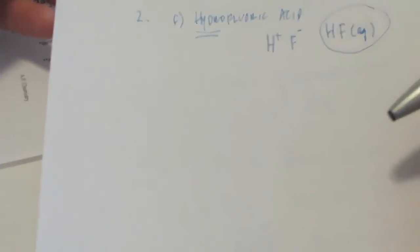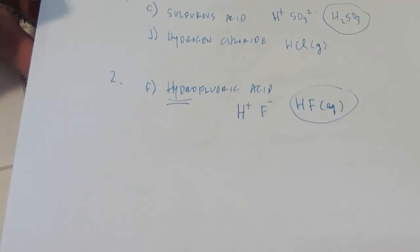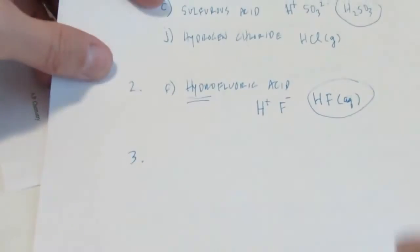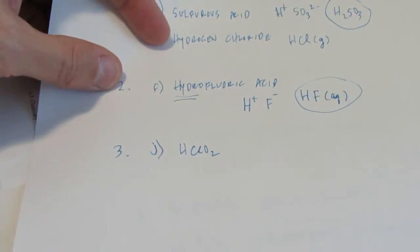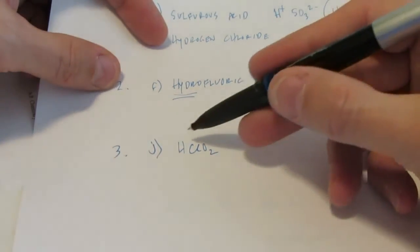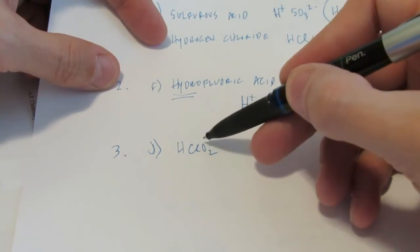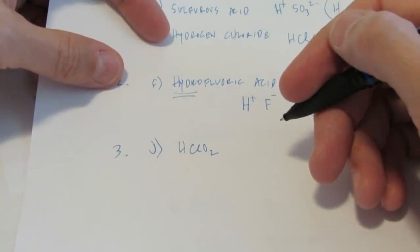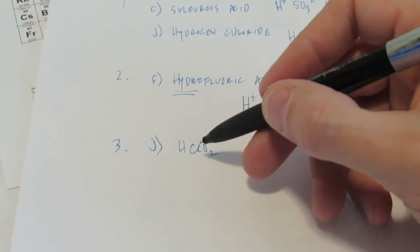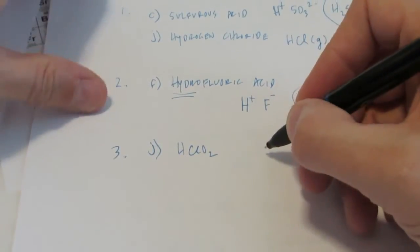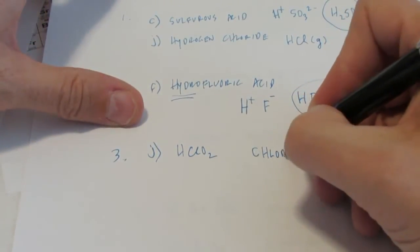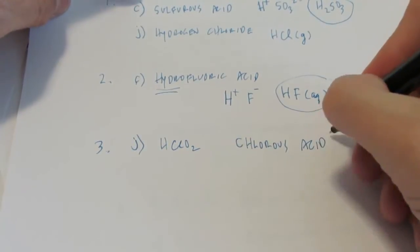Let's do number 3, letter J — it says HClO₂. Do you recognize that as an oxyacid? It starts with H and it's bonded to a polyatomic ion — it's an oxyacid. ClO₂ — let's find that. It's called the chlorite ion. -ite radicals become -ous acids. So we call that chlorous acid.